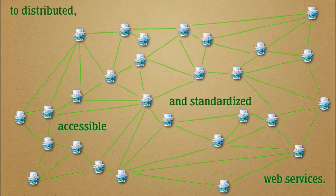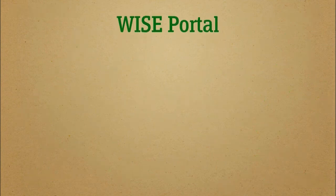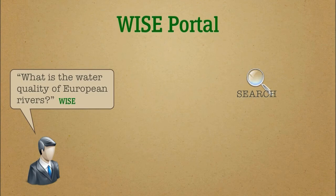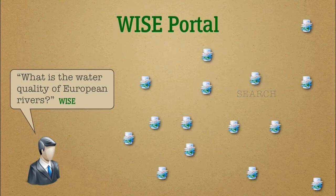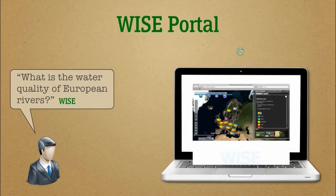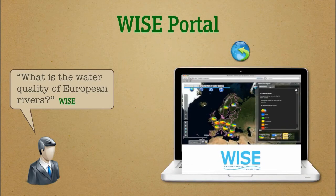Let's see what happens when a user asks the Water Information System for Europe — WISE — what the water quality of European rivers is. WISE is based on SDI technology and connects national databases to provide information at the European level in a standardized way. WISE queries the SDI and publishes a map on its data portal to answer the question.